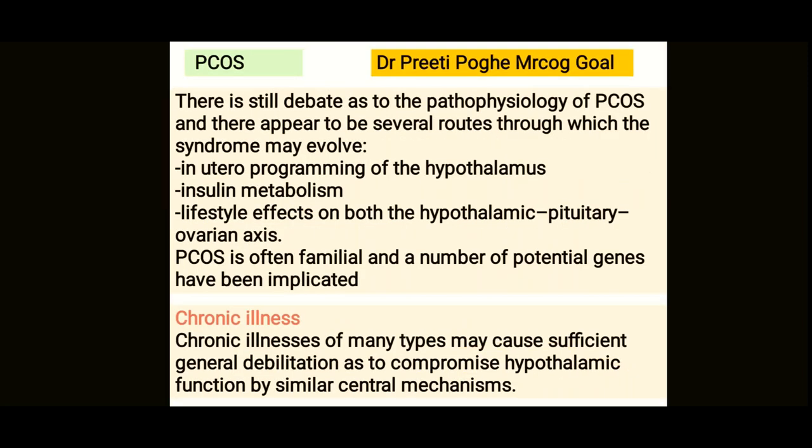PCOS is a very important cause of secondary amenorrhea. The pathophysiology is still debated but may involve intrauterine programming of the hypothalamus, insulin metabolism, or lifestyle factors. PCOS is often familial and a number of potential genes have been implicated. Chronic illness patients have general debilitation which causes hypothalamic dysfunction and amenorrhea.